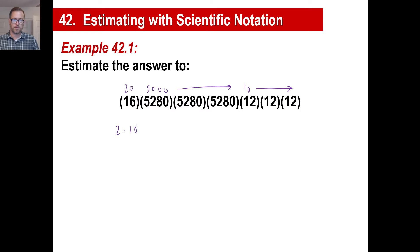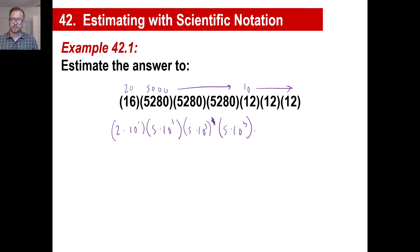So we'll put each of those in scientific notation. We'll have 2 times 10 to the first for 20, 5 times 10 to the third — and we'll do that three times. Then we'll have 1 times 10 to the first, 1 times 10 to the first, and 1 times 10 to the first, if you want to do it that way.